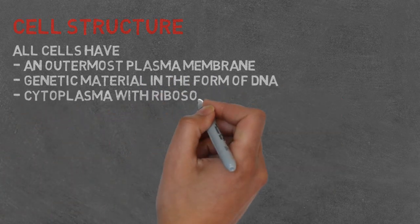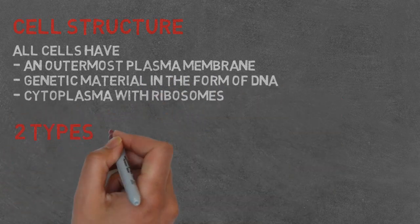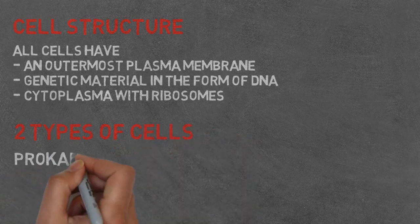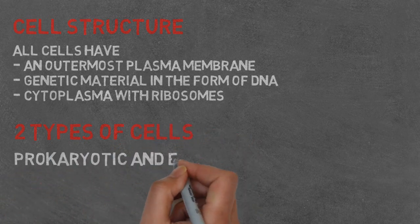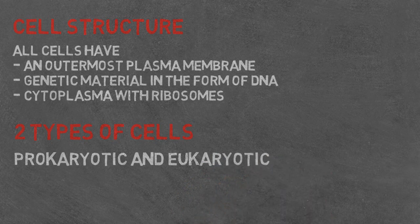What are the two types of cells, and the difference between them? Prokaryotic, which are smaller and simpler, and eukaryotic, which contain a nucleus and membrane-bound organelles.